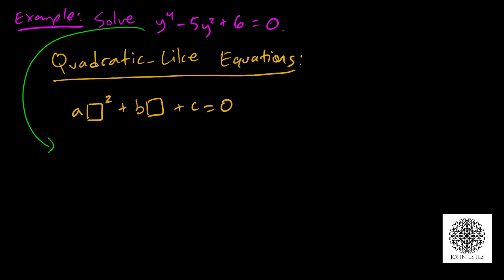I could have taken this equation and written it like this: y-squared, quantity squared, minus 5y-squared plus 6 equals 0. Because y-squared, quantity squared, is y to the fourth power. So what I'm doing is taking my quadratic-like idea and plugging in y-squared for those boxes. That means I can actually solve this like a quadratic equation — the same way. What I like to show my students is this substitution idea, which helps take out some of the mystery of quadratic-like equations.